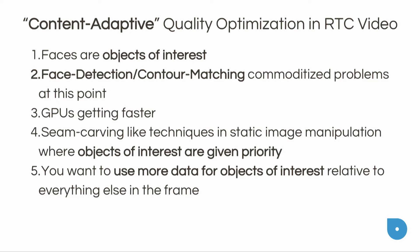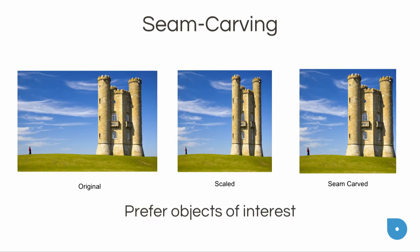GPUs are getting faster and computation at the edge has become feasible. You can borrow interesting ideas from other domains like static image processing — techniques like seam carving — where objects of interest are given more priority relative to other objects in an image. As an example, this is what seam carving looks like: the original image shows a castle and a person. If you scale it naively, you get visual artifacts and a skinny castle. Seam carving tries to maintain relative proportions of objects of interest.